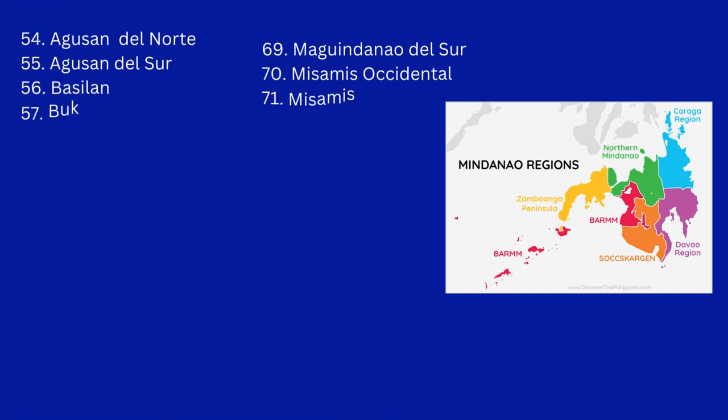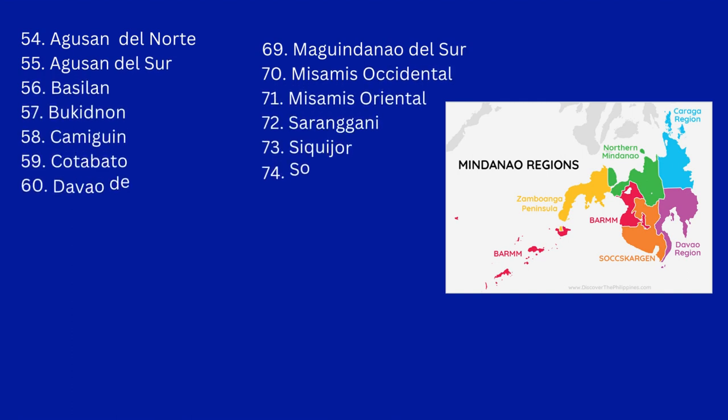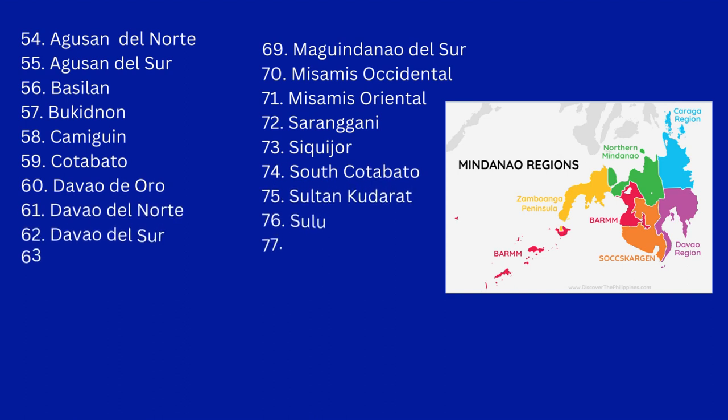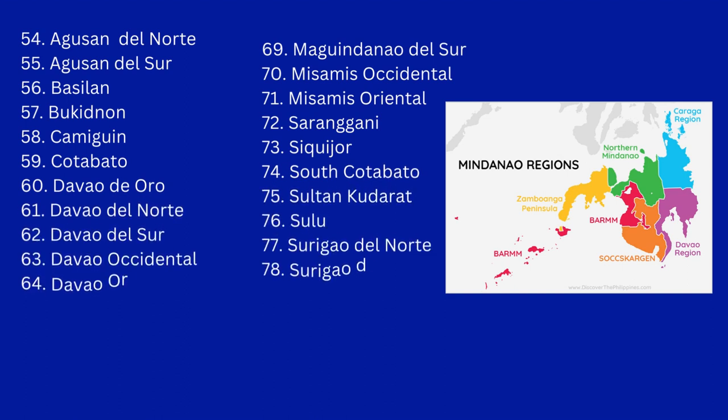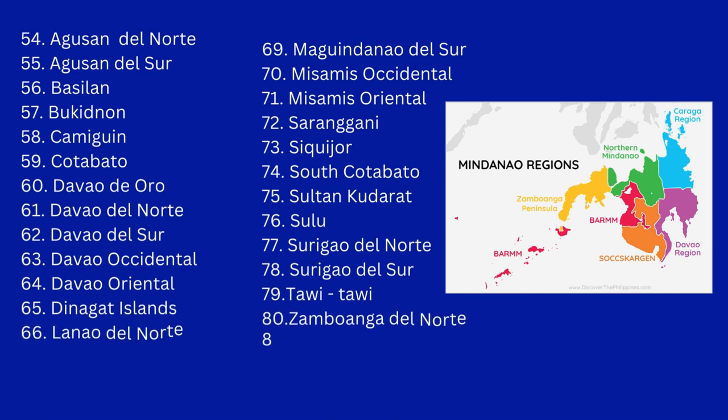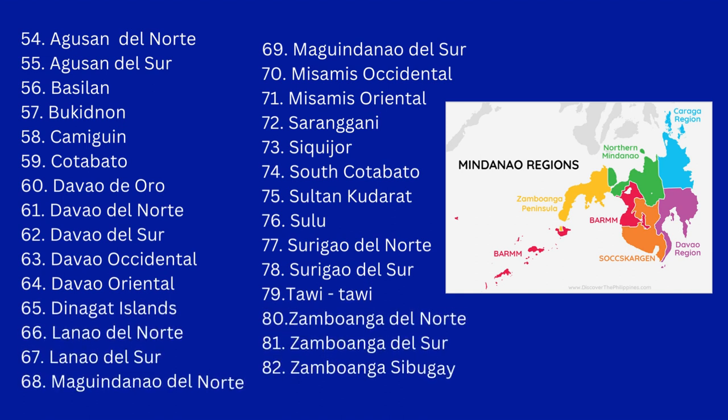And in Mindanao, we have Agusan del Norte, Agusan del Sur, Basilan, Bukidnon, Camiguin, Cotabato, Davao de Oro, Davao del Norte, Davao del Sur, Davao Occidental, Davao Oriental, Dinagat Islands, Lanao del Norte, Lanao del Sur, Maguindanao del Norte, Maguindanao del Sur, Misamis Occidental, Misamis Oriental, Sarangani, Siquijor, South Cotabato, Sultan Kudarat, Sulu, Surigao del Norte, Surigao del Sur, Tawi-Tawi, Zamboanga del Norte, Zamboanga del Sur, and Zamboanga Sibugay.